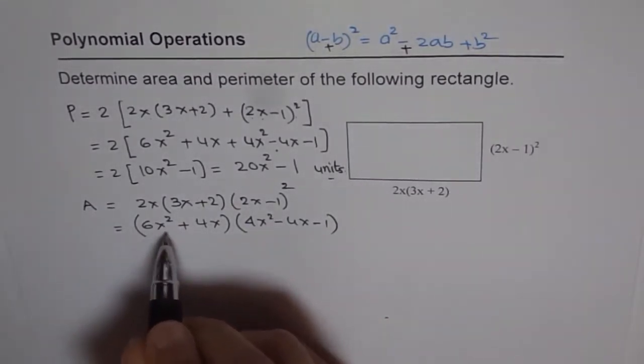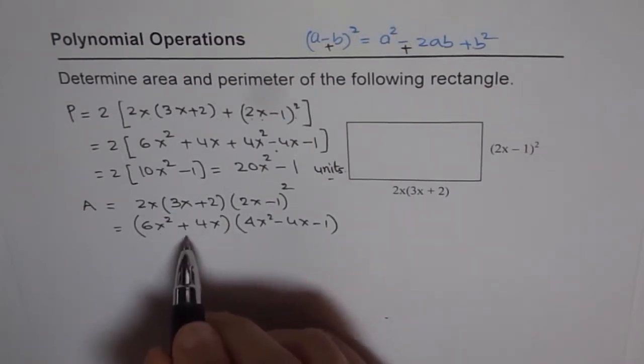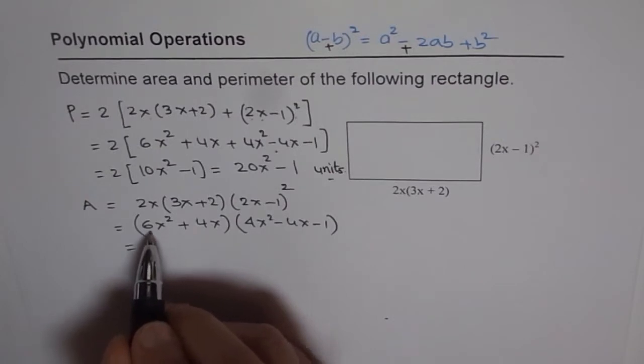And now we got two terms here and three. When we do distributive property, we should get 2 times 3, 6 terms. So let's multiply first with 6x squared.